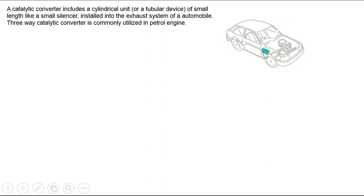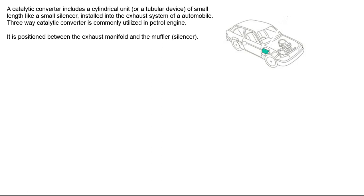The 3-way catalytic converter is commonly utilized in petrol engines. It is positioned between the exhaust manifold and the muffler, that is the silencer.